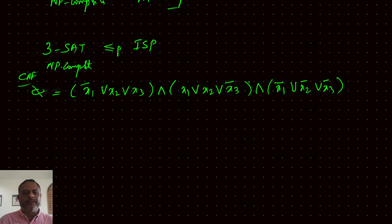This is a decision problem: given values of X1, X2, X3, we need to decide whether the 3SAT CNF function is true or false.